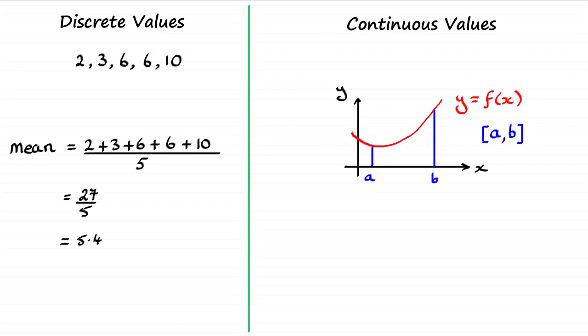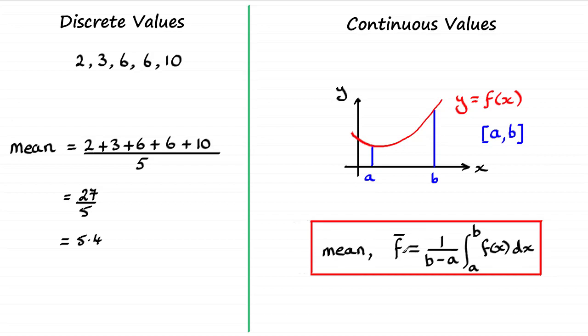Well, the formula is this one. The mean is given by f̄, which is essentially the sum of the infinite number of values, the y values, in this interval between a and b. That is given by calculus as the integral from a to b of f(x) dx. Think of that as the sum of all the y values in this interval, that infinite number, and then we're dividing it by the width of this interval, b minus a.